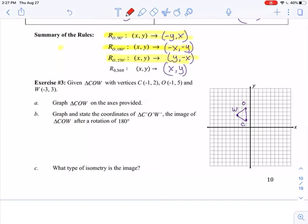Second part wants me to graph and state the coordinates of C prime, O prime, W prime, the image of triangle COW after a rotation of 180. So we'll just look up here. What's our rule for a rotation of 180? Our rule for a rotation of 180 is that (x, y) becomes (-x, -y). Easy enough. So C prime, change the sign of the x, change the sign of the y. O prime, change the sign of the x, change the sign of the y. And W prime, change the sign of the x, change the sign of the y.